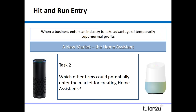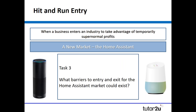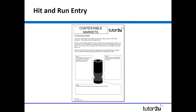The second task is more analytical: what other firms could enter and become one of those hit-and-run businesses entering the market? I'd expect students to suggest Apple, Samsung, Lenovo, and other major tech firms. The third task links back to barriers of entry and exit — development costs for the home assistant might prevent a company from entering, while the cost of closing your factory once the home assistant becomes less popular in the future could be a barrier to exit.